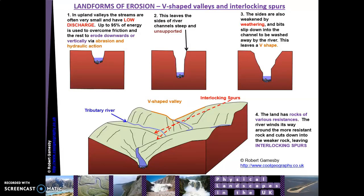So those are the three main features found in the upper course: waterfalls, which lead onto gorges as they retreat; V-shaped valleys, caused by the vertical erosion of the river into the landscape; and interlocking spurs, where the valleys interlock. In the next video we'll be looking at the middle course and lower course of the river and the features found there.